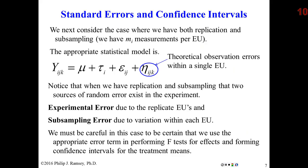What happens when we subsample? Now we've got two sources of noise: the variation between the experimental units and the variation within. By convention, we often use the Greek letter eta as a measure of sampling error. Eta_ijk is the error associated with the k-th subsample in the j-th replicate of the i-th treatment level. Epsilon represents experimental error or variation between the EUs; eta represents the variation within. In the end, we have two sources of noise to consider: experimental error and subsampling error.